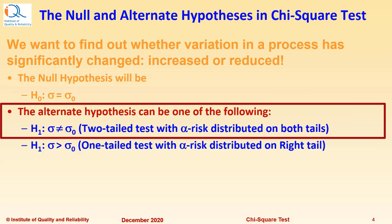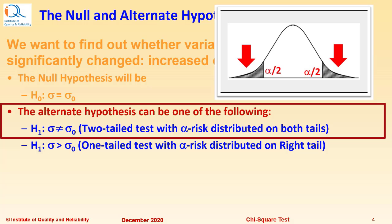The Alternate Hypothesis can be one of the following: σ ≠ σ₀. This will be a 2 tail test with Alpha risk distributed on both the tails equally.